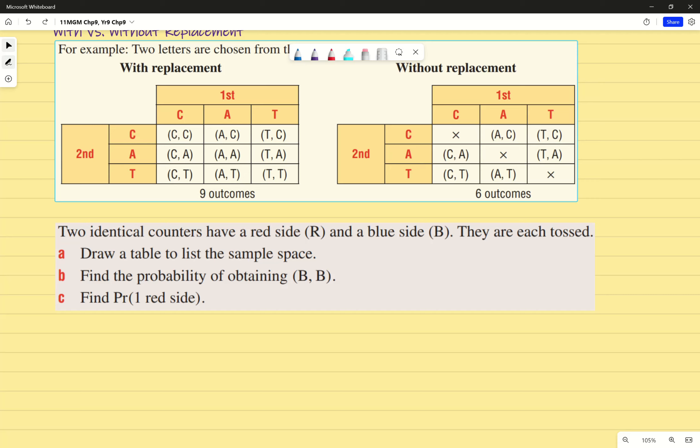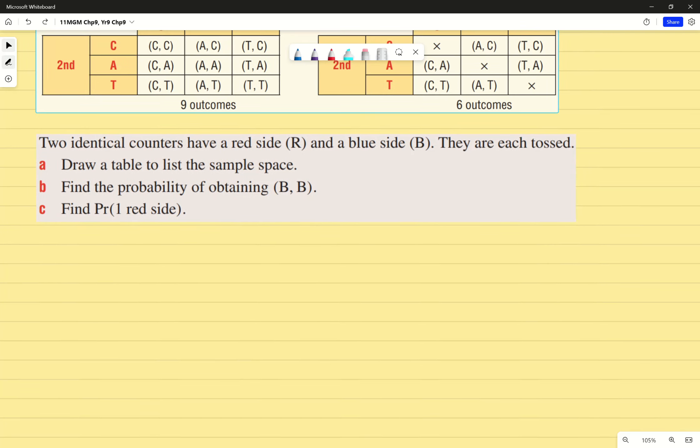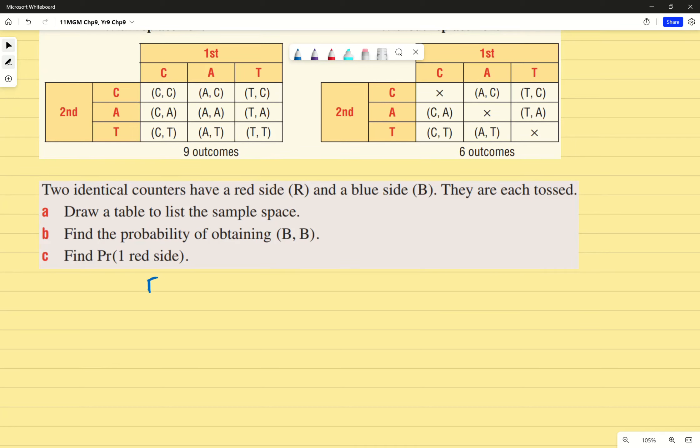So because they're tossed, in this case, you can get a red and a red, can't you? Let's say we're going to draw out the table. I'm going to first make it very clear which side I'm answering first. I'm going to do first, and then red and blue. And the second, red and blue here as well.